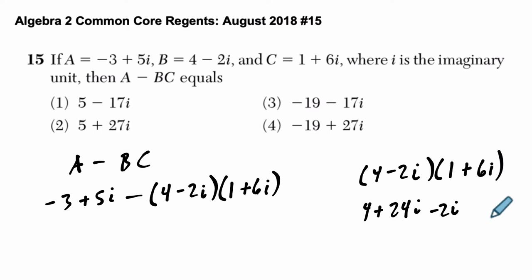Negative 2i times 6i is negative 12i squared. So that gives us negative 3 plus 5i minus this term right here. And I'm going to simplify. So we get 4 and then plus 24i minus 2i. That's just the same as 24 minus 2, which is 22 groups of i. And then minus 12i squared.